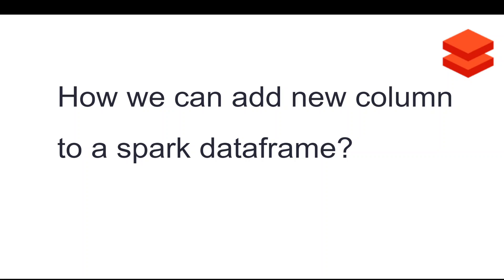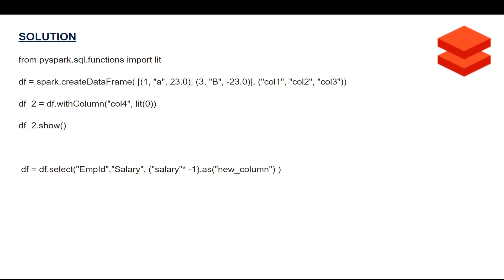The next question is: how can you add a new column to a Spark DataFrame? It's a pretty simple question, but through it an interviewer wants to understand how well-versed you are with the coding and how much hands-on experience you have. The solution: first I'm creating a DataFrame using the spark.createDataFrame API, then I'm using df.withColumn. The column name is 'column4' and the value is lit(0), which will add 0 in all the rows of that column.